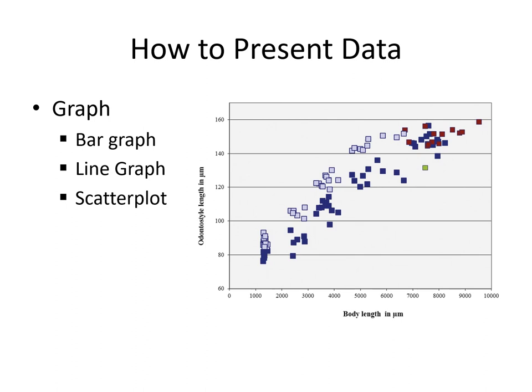Then you also have scatter plots. Scatter plots are simply graphs that have points, which are combinations of x values and y values. They usually tell us if there is a relationship between two variables, such as body length in micrometers and odontostyle length in micrometers. It's quite obvious in this scatter plot that as your body length increases, there is a corresponding increase in the length of your odontostyle.